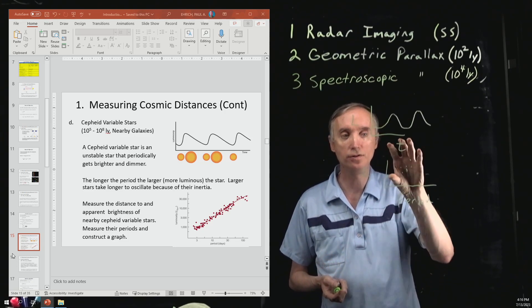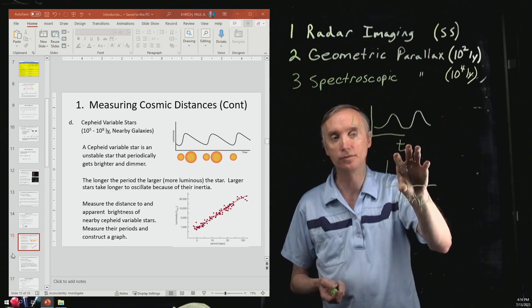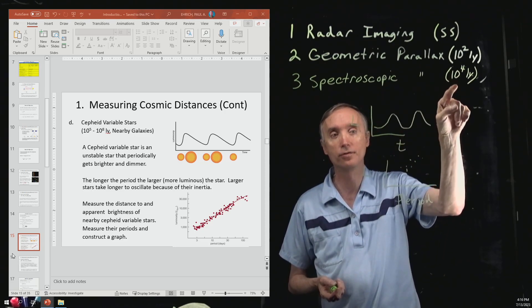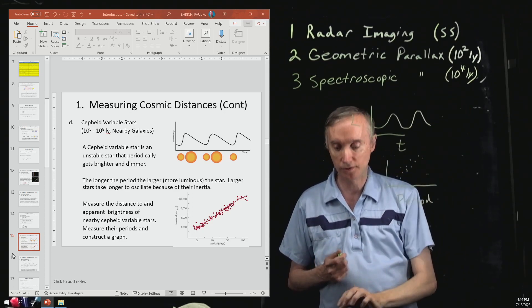Now how do we use the graph to figure out stars that are further away than 10,000 light years?